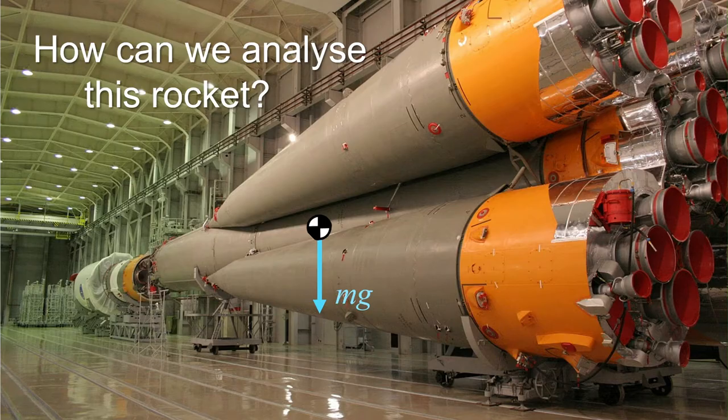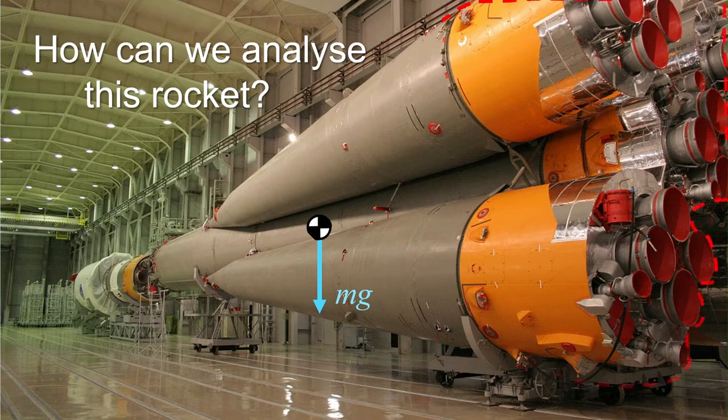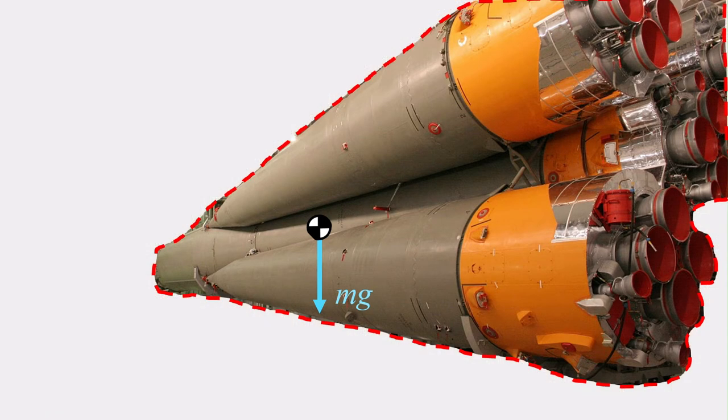In order to isolate the forces acting on the lower stage of the rocket, we need to cut it out of its surroundings, separate the reaction forces the surroundings exert on the rocket from the action forces the rocket exerts on its surroundings. We need to free the body in a way that we can diagram these reaction forces.